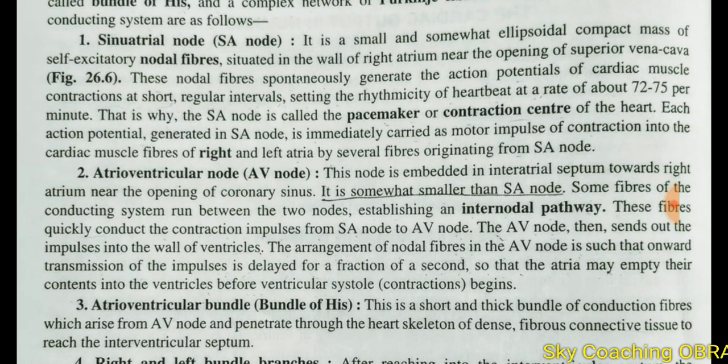The sinoatrial node is a small and somewhat ellipsoidal compact mass of self-excitatory nodal fibers. These nodal fibers are situated on the wall of the right atrium, near the opening of the superior vena cava.